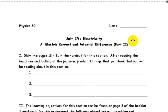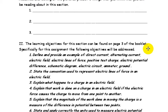Welcome back, Physics 30. This is the second booklet in the electricity, electric current, and potential difference section. There are quite a few objectives we're going to look at with this booklet.